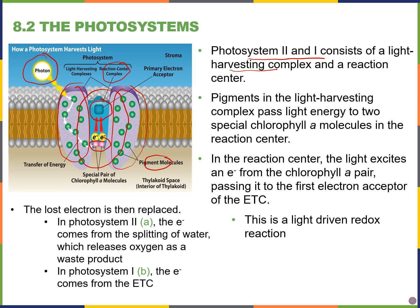Light will hit the light harvesting complex within the photosystem — this whole thing is embedded in the thylakoid membrane — and the energy from the light will be passed from pigment to pigment until it reaches the central pair of chlorophyll a molecules. When photons hit these molecules, they send electrons from a lower energy state to a high energy state. Those excited electrons are passed to a primary electron acceptor — a light-driven redox reaction where the primary electron acceptor is reduced and the chlorophyll a is oxidized.